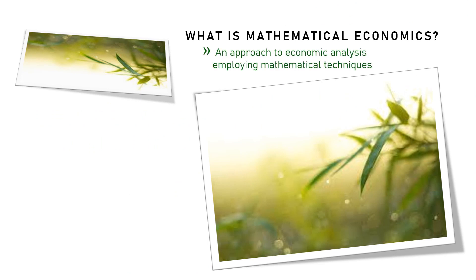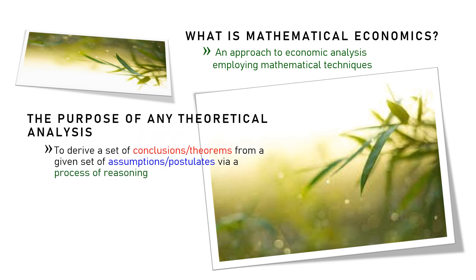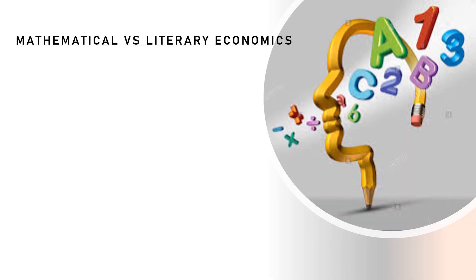Okay, we begin with this basic question. Certainly, mathematical economics is not a branch of economics. Math here is an approach or tools used in economic analysis. And as in any other field, this is also the purpose of theoretical analysis in economics. We have three keywords here: assumption or postulates, process of reasoning, and conclusions or theorems. Then, what makes mathematical and literary economics different?